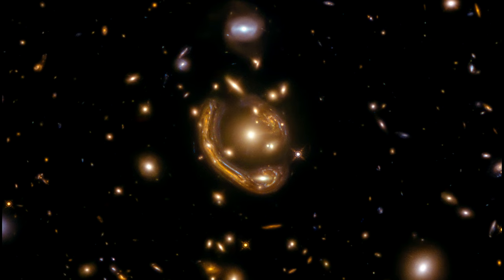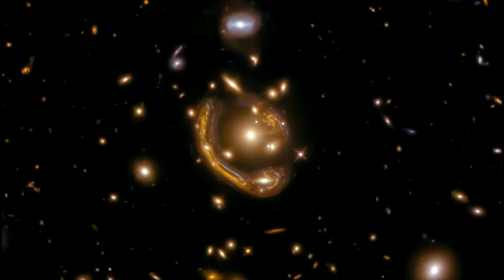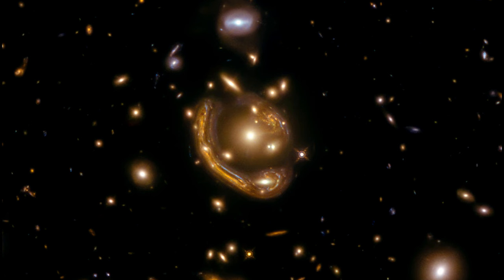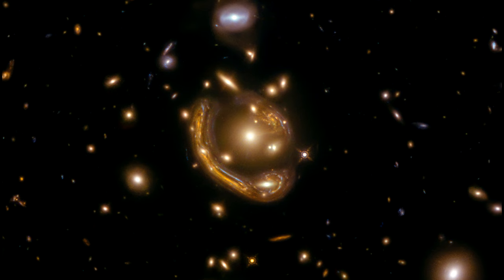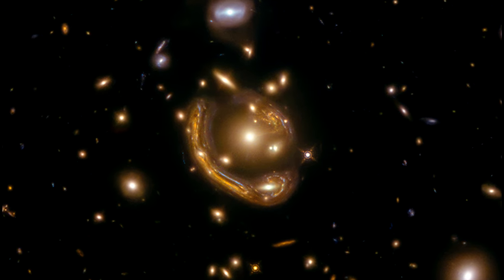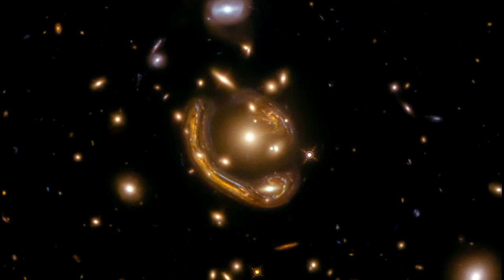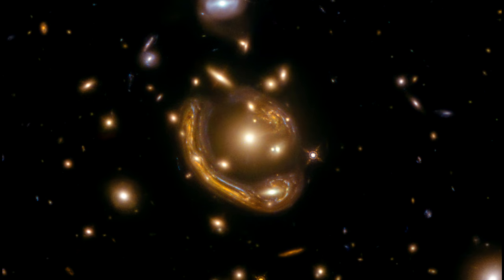The object was nicknamed the molten ring because of its appearance. Magnification in this lensing ranges from 20 to 40 times the source size. But there is one more additional optical process involved that can magnify an object thousands of times over.